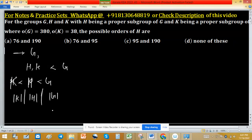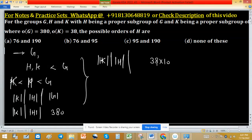Order of G is 380. So order of K will divide order of H, and order of H will divide 380. So we can write 380 as 38 into 10, and order of K divides order of H divides this.